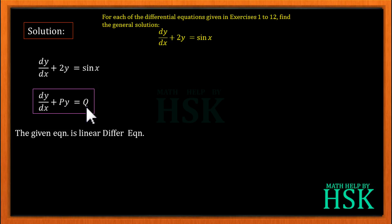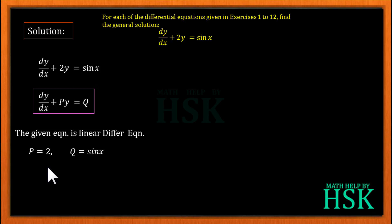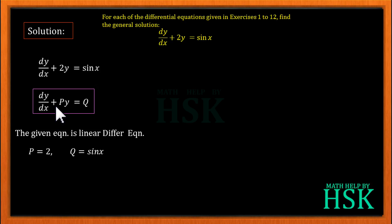Comparing both equations, we can write P = 2 and Q = sin x. Whenever we are given a linear differential equation, the first thing we have to do is calculate the integrating factor. For the general form dy/dx + Py = Q, the integrating factor is given by e raised to the power of the integration of P with respect to x.